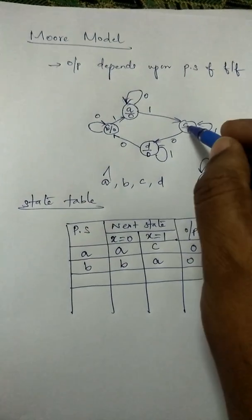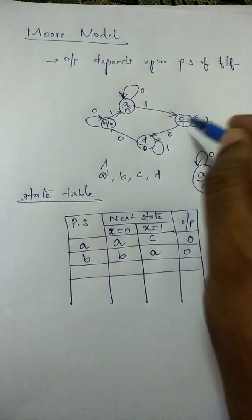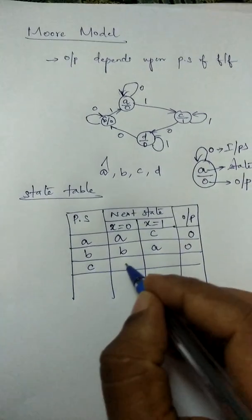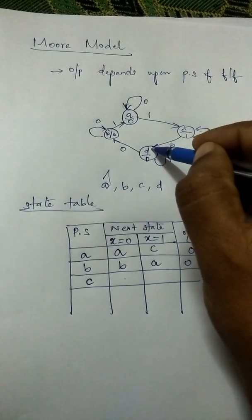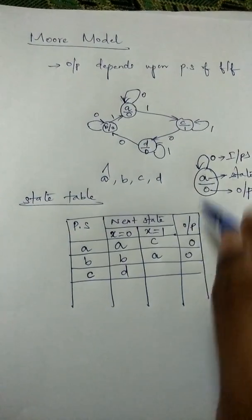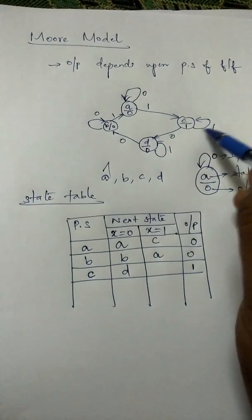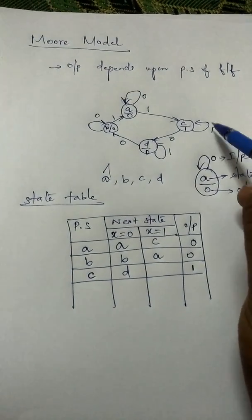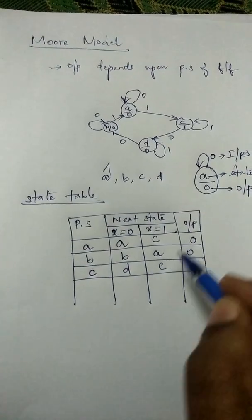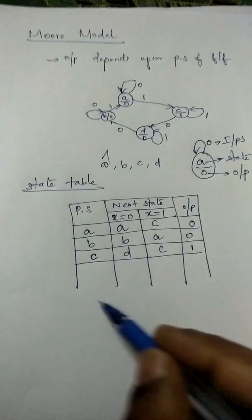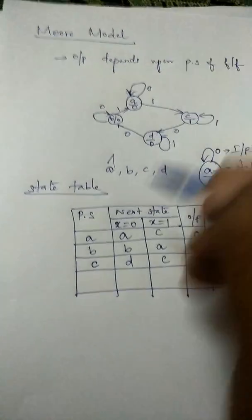From state C, when the input is 0 it goes to state D, with output 1. When the input is 1, it stays in the same state C, and the output is again 1.